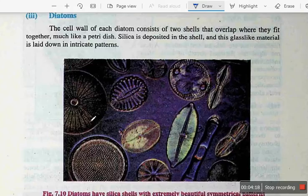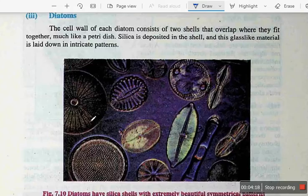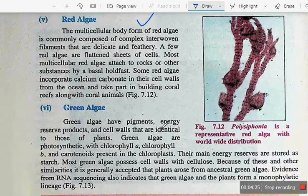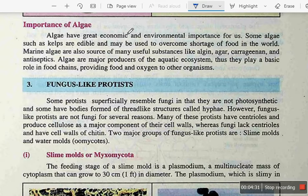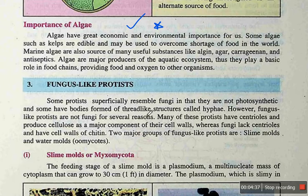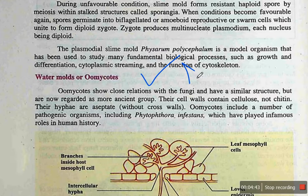Then there is Brown Algae and Red Algae covered in the major groups — you have to go through these. The most important things to prepare are the number of fungal groups and Water Molds, which are also important.